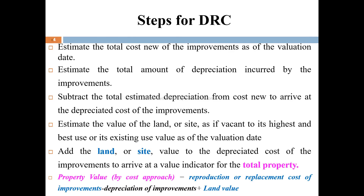The steps of the cost approach are: first, estimate the total cost of new improvement as of the valuation date — that is, the total cost of new improvement including replacement cost and reproduction cost. Then estimate the total amount of depreciation and subtract it from the new replacement or reproduction cost. Then estimate the value of the land.